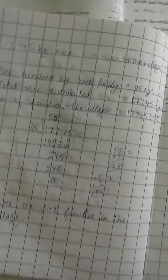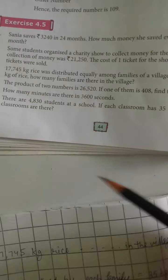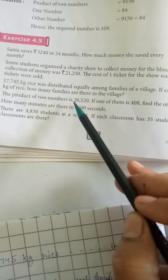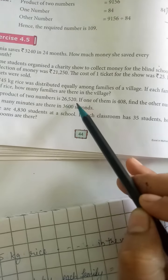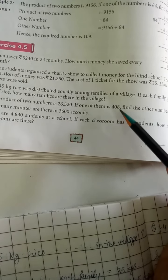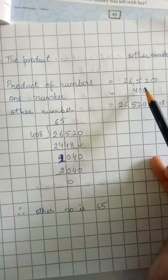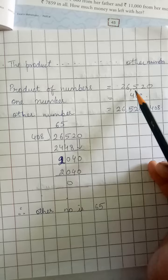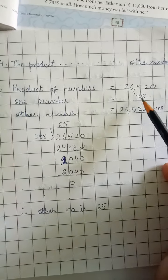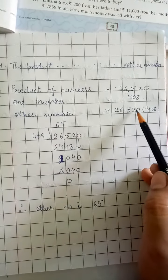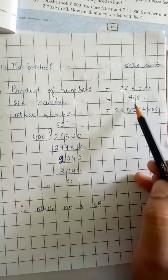Now let's move to question number 4. The product of two numbers is 26,520. One of them is 408. Find the other number. Two numbers' product is 26,520, one number is 408, other number we have to find out.